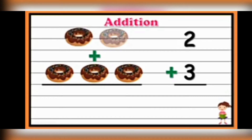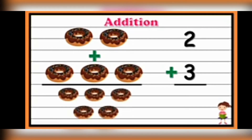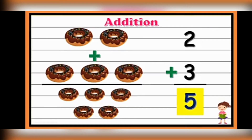Let's start counting the donuts again: 1, 2, 3, 4, 5. So totally we have 5 donuts. So 2 plus 3 gives 5.